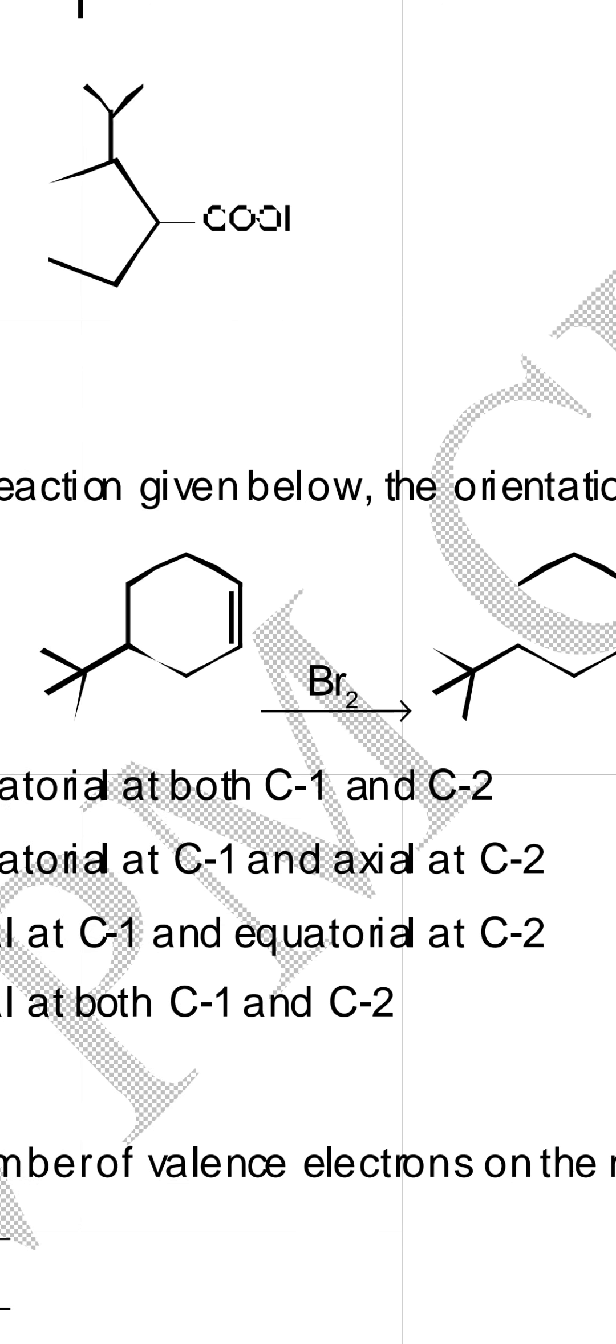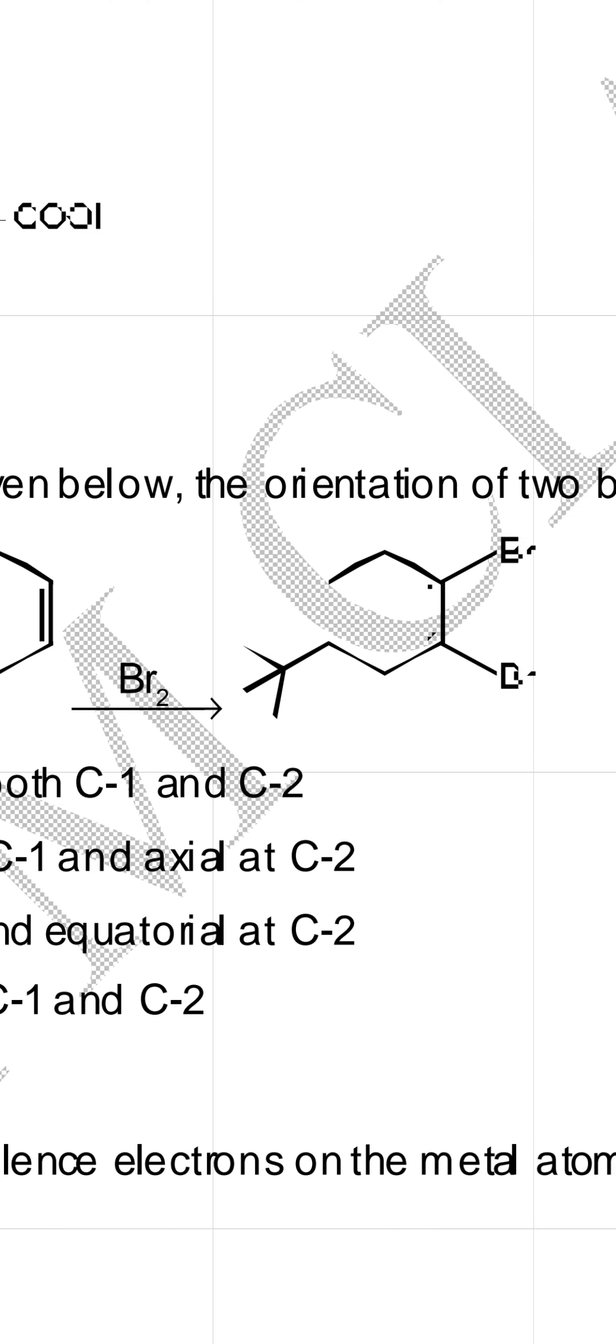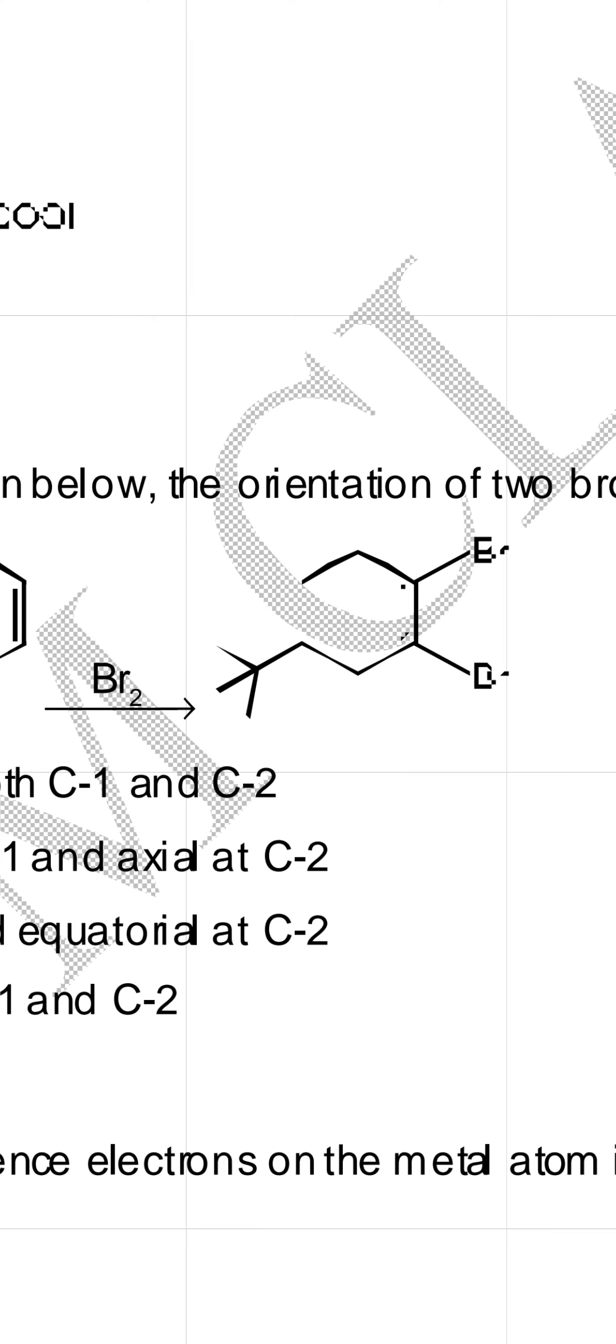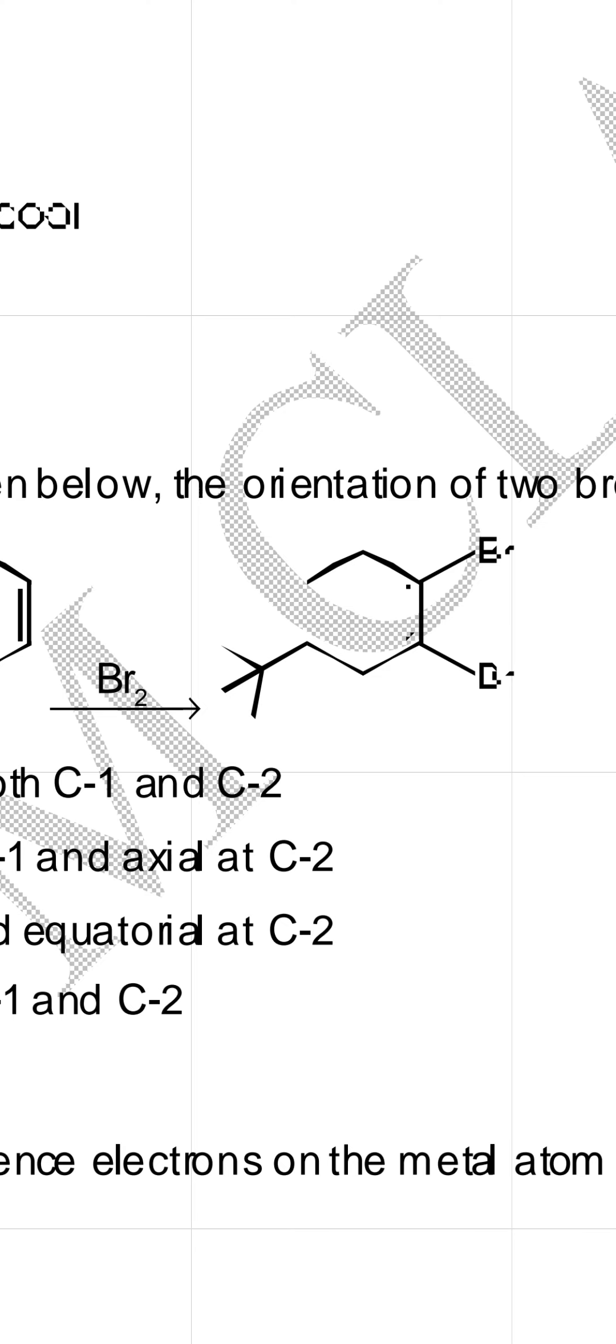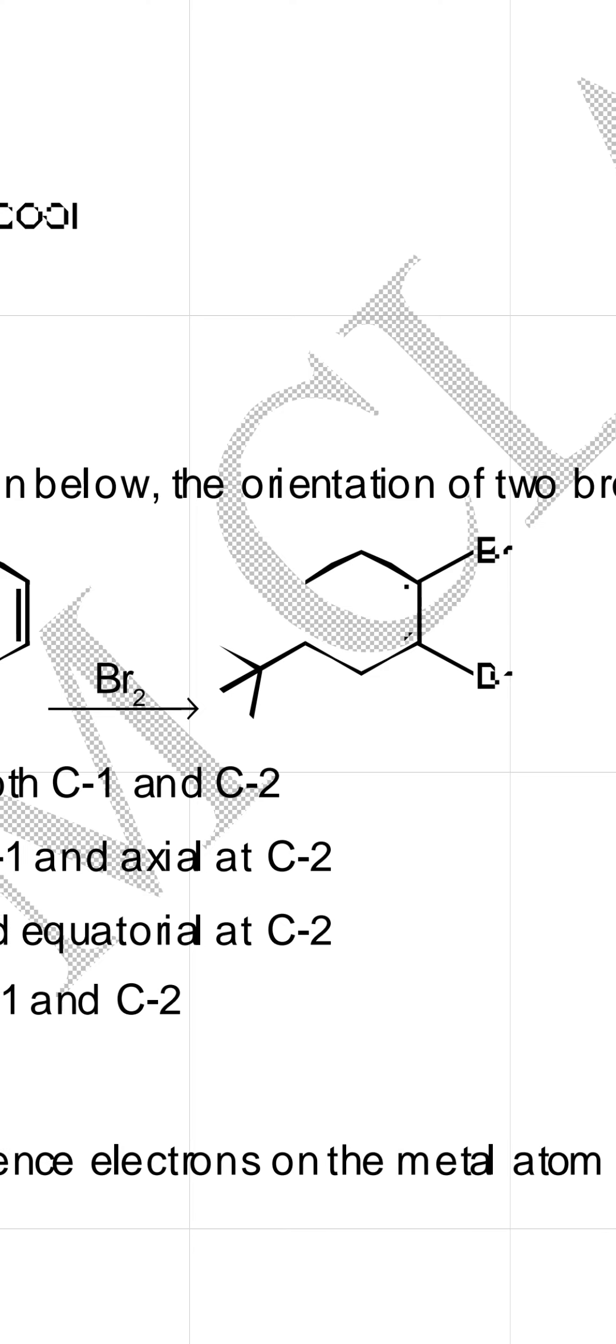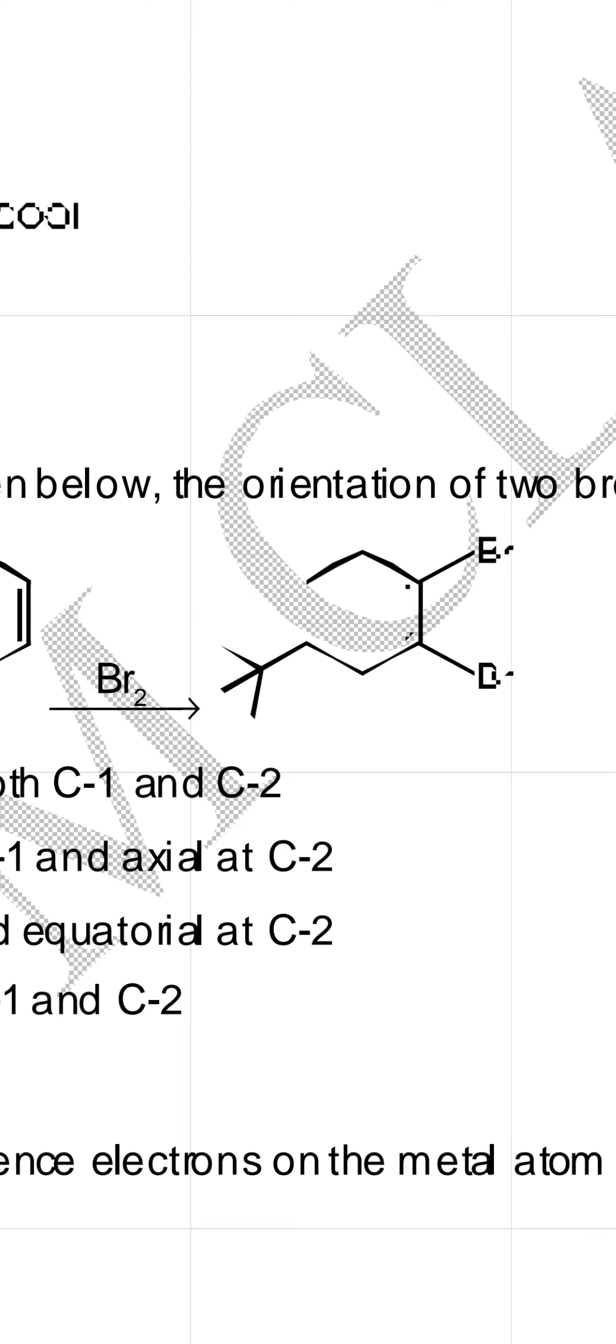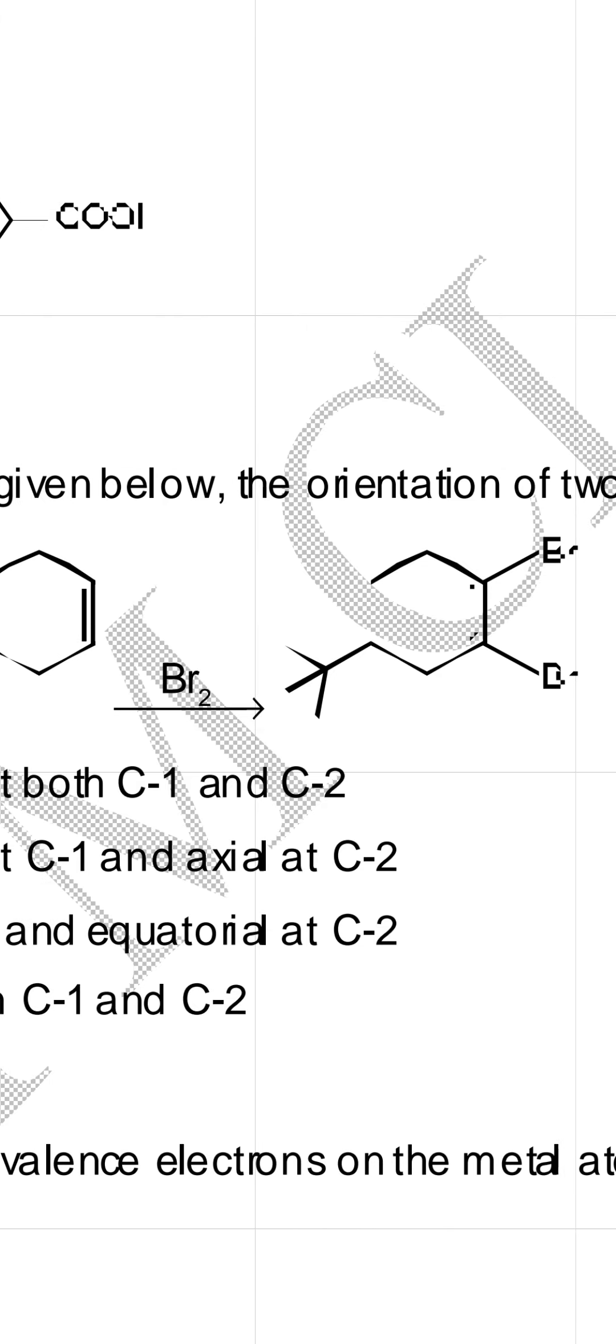So, after addition, this ring becomes cyclohexane. If it is cyclohexane, then the question is, these two bromines are axial, equatorial, axial-equatorial, or equatorial-axial. What is the possibility?